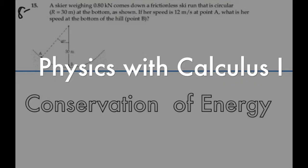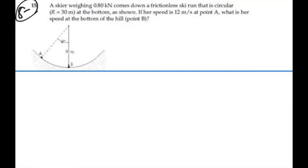Here's problem 8.15. A skier weighing 0.80 kilonewtons comes down a frictionless ski run that is circular, R equals 30 meters at the bottom as shown. If her speed is 12 meters per second at point A, what is her speed at the bottom of the hill at point B?